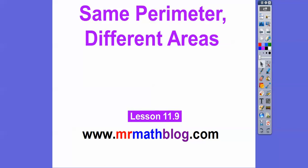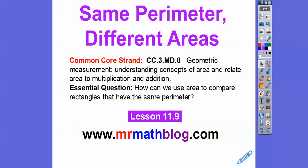Hey everybody, this is Mr. Math Blog. This lesson is about same perimeter with different areas. Our common core question is: how can we use area to compare rectangles that have the same perimeter?